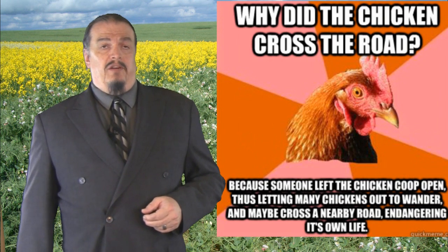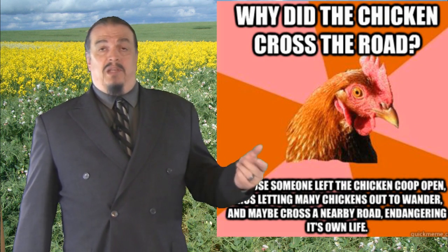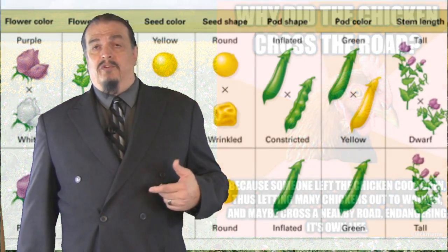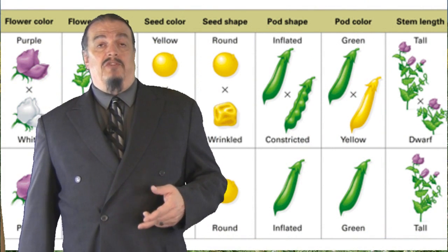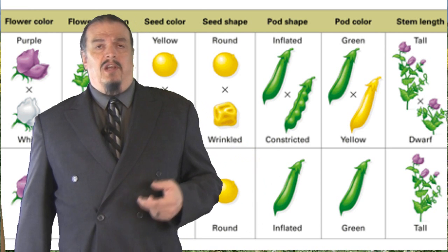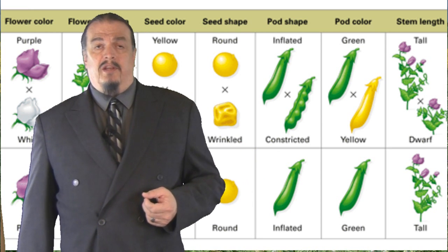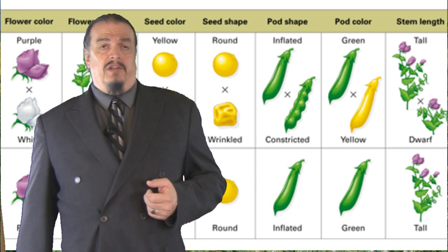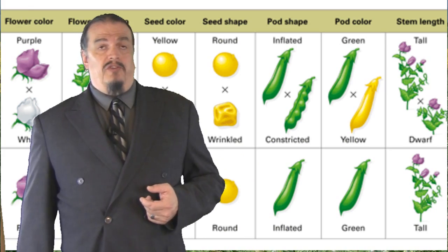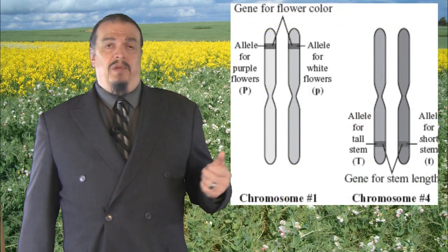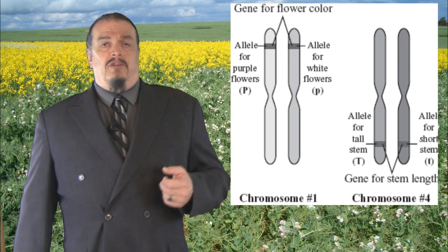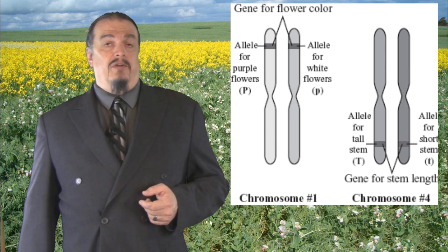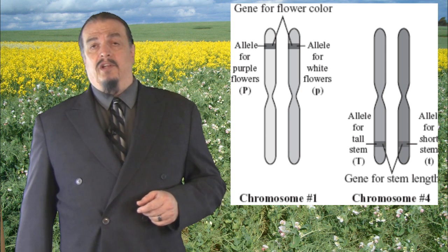We'll talk more about the genetics of chickens later, but first let's finish talking about pea plant genetics. When Mendel studied the traits of pea plants, he mostly studied what were just two outcomes — traits that were controlled by genes that were controlled by just two alleles, like the color of pea plants and their stem lengths. On the two pea plant chromosomes in this diagram, you'll see that there are two different alleles for two of the traits Mendel was studying. The dominant trait is noted with a capital letter and the recessive trait with a lowercase letter.